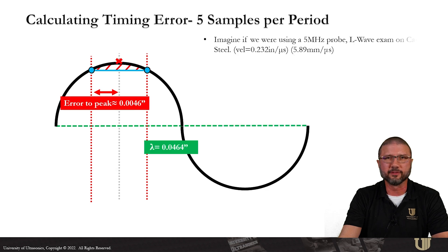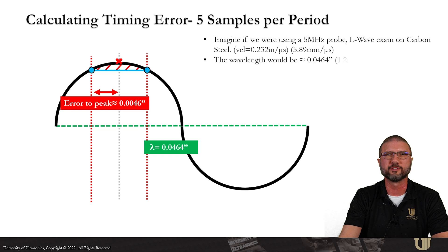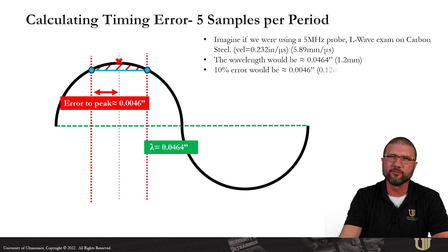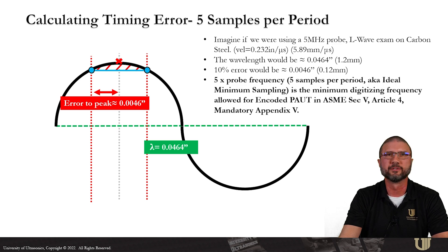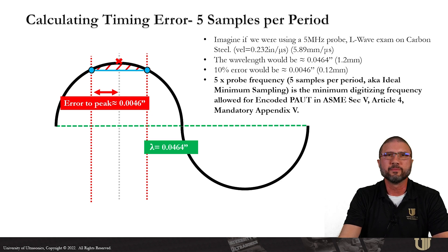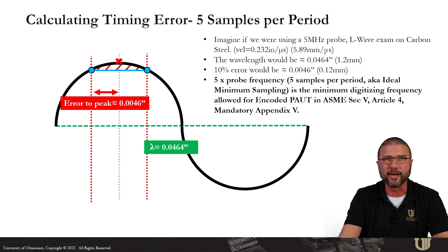For a 5 megahertz L-wave exam on carbon steel, that 10% error equals about four or five thousandths of an inch, about 0.12 millimeters — really small and getting very close. Five times the probe frequency is actually the minimum digitizing frequency allowed for encoded phased array in ASME Section 5, Article 4.